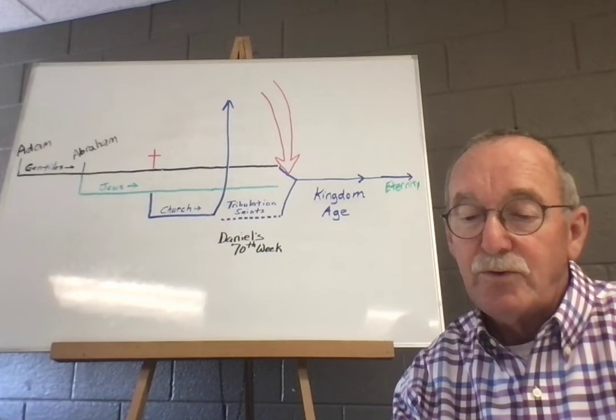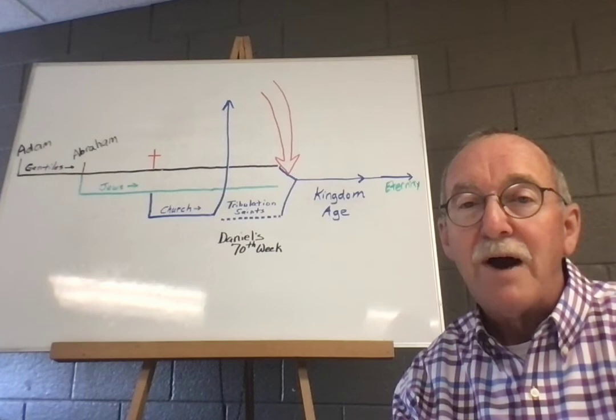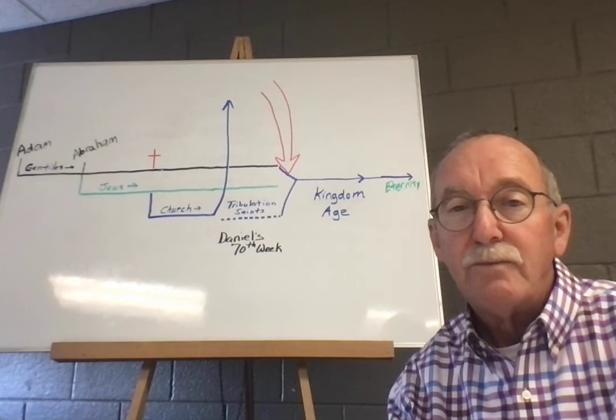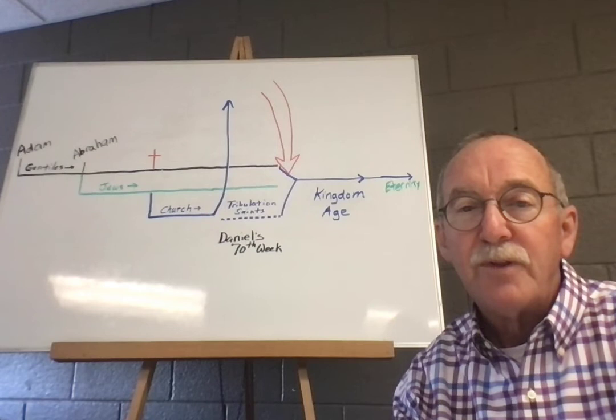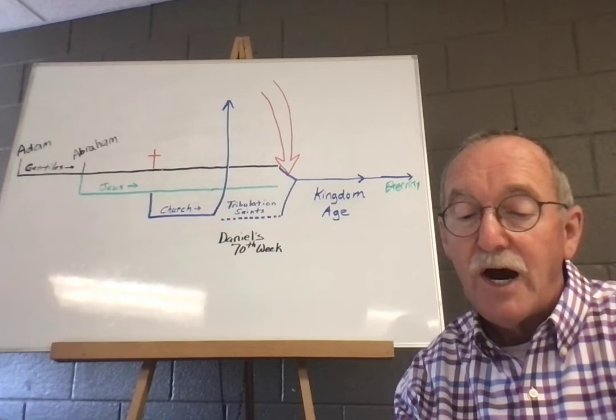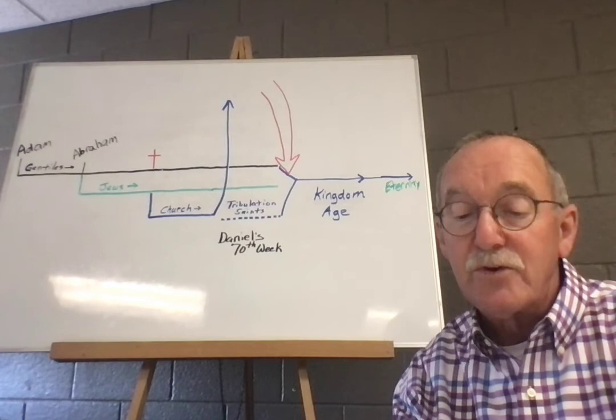And so he ends up chapter 3 with another tremendous prayer. 'For this reason I bow my knees to the father of our Lord Jesus Christ from whom the whole family in heaven and earth is named to the riches of his glory to be strengthened with might through his spirit in the inner man.' The inner man is that portion of us, our spirit, that's experienced the new birth, have been born again into the family of God. 'That Christ may dwell in your hearts through faith that you being rooted and grounded in love may be able to comprehend with all the saints what is the width and length and depth of Christ that passes all knowledge and that you may be filled with all the fullness of God.' And then he says, 'now to him who is able to do exceedingly abundantly above all that we ask or think according to the power that works in us to him be glory in the church by Christ Jesus to all generations forever and ever amen.'